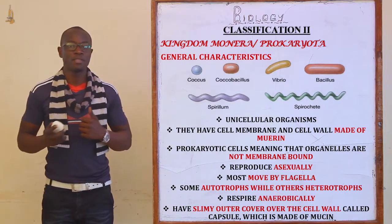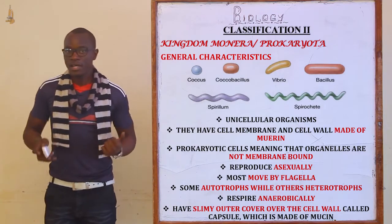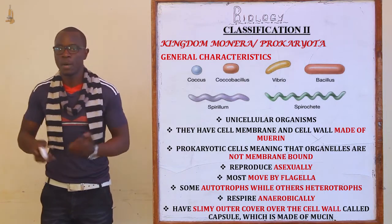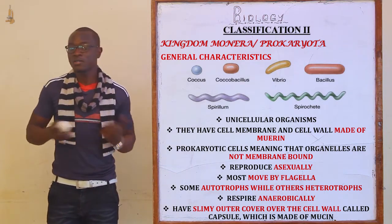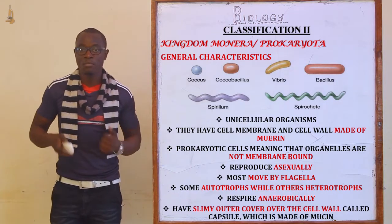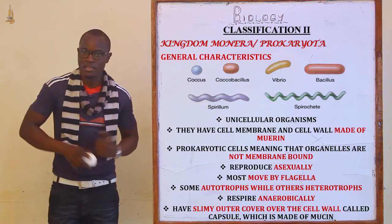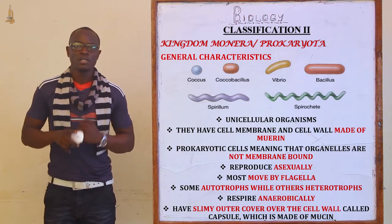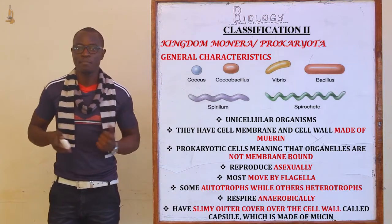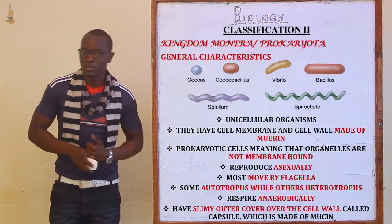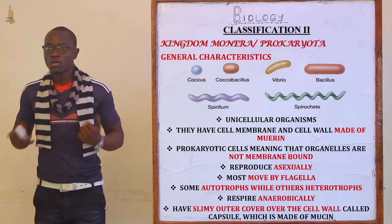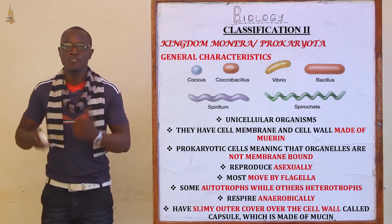They have a cell membrane and a cell wall mainly made up of the murein enzyme. These cells are prokaryotic, meaning their nucleus is not membrane-bound — the nucleus does not have any nuclear membrane. The organelles in these organisms also do not have membranes, which is why they are called prokaryotic cells. The word prokaryota originates from prokaryotic cells, meaning they lack membranes around their organelles. These organisms reproduce asexually, and most of them move by flagellar means.